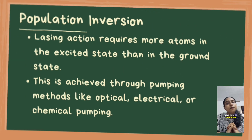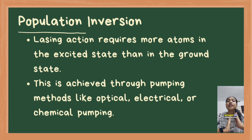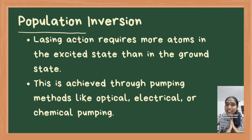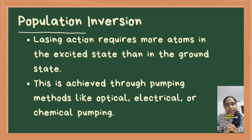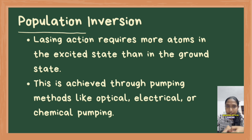What is Population Inversion? For lasing action, more atoms must be in an excited state than in the ground state — a condition known as Population Inversion. Pumping mechanisms are the techniques to achieve Population Inversion, including Optical Pumping, Electrical Discharge, and Chemical Reactions.